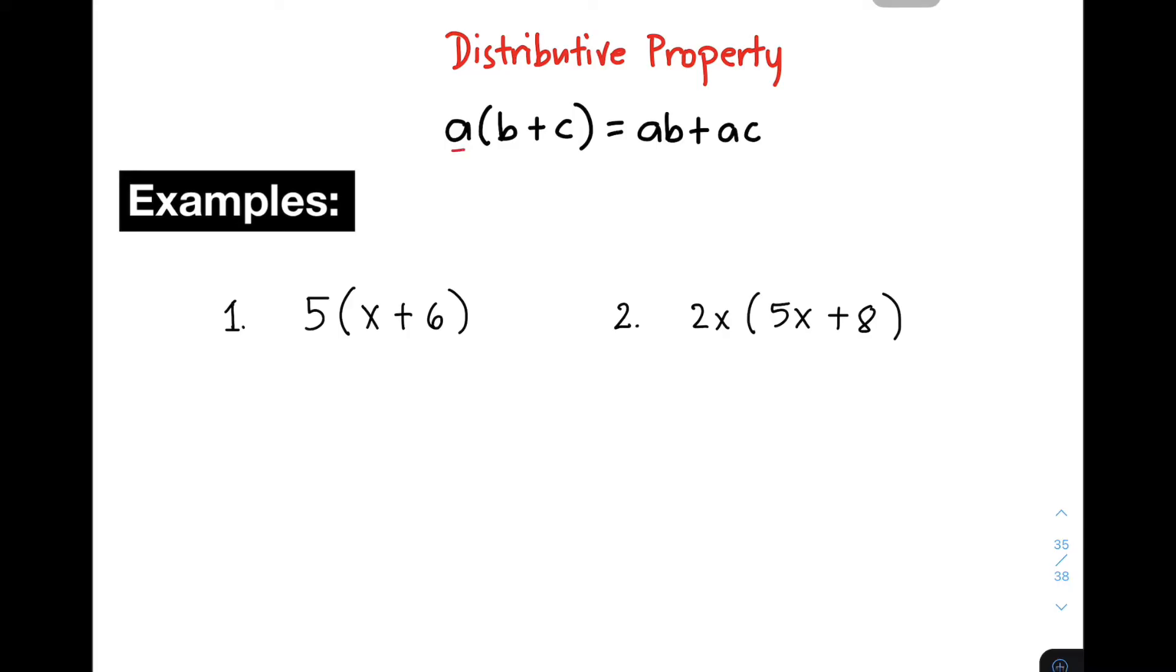So we have here A must be multiplied to B. So you need to distribute A. A times B, it will give you AB as the product. And A times C, it will give you the product of AC. So for you to better understand what is meant by distributive property, I will give you three examples for this part of our video.